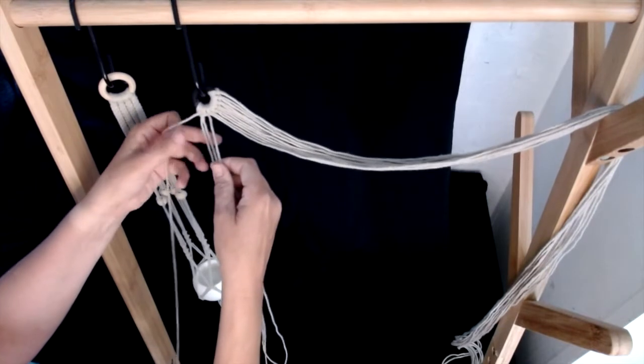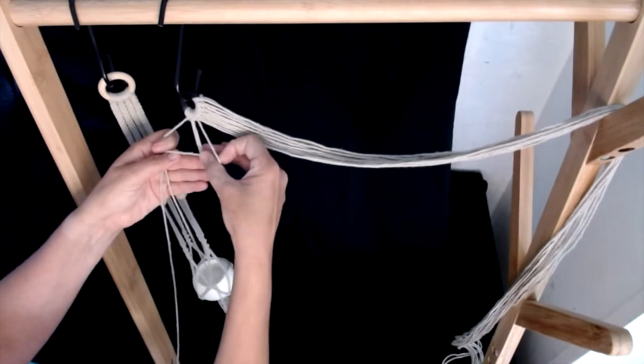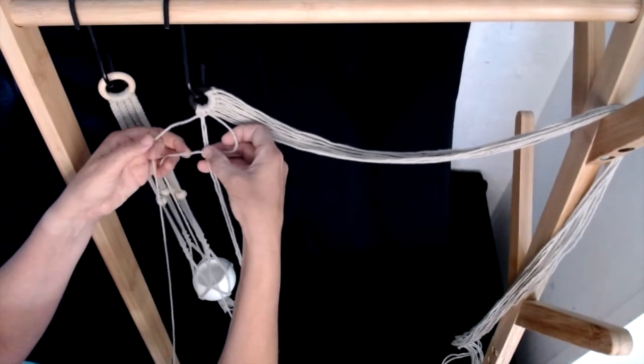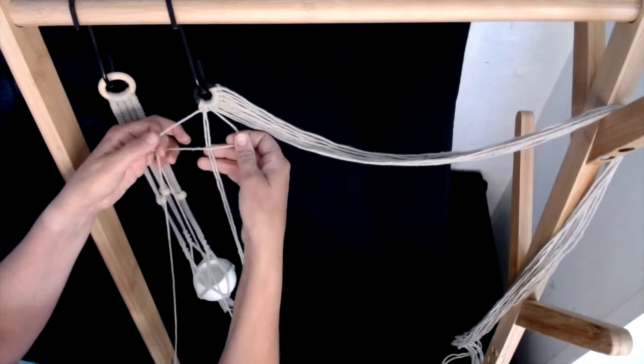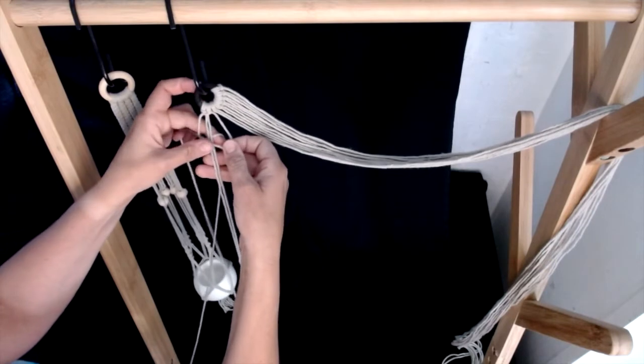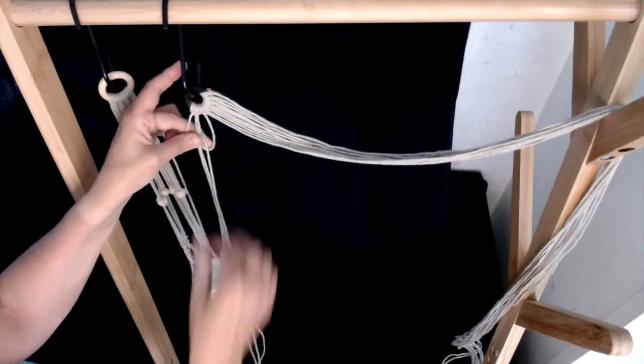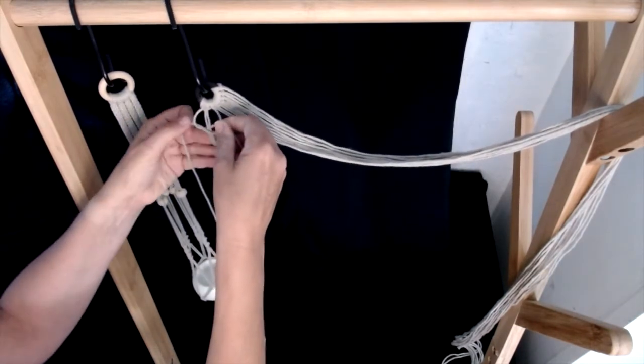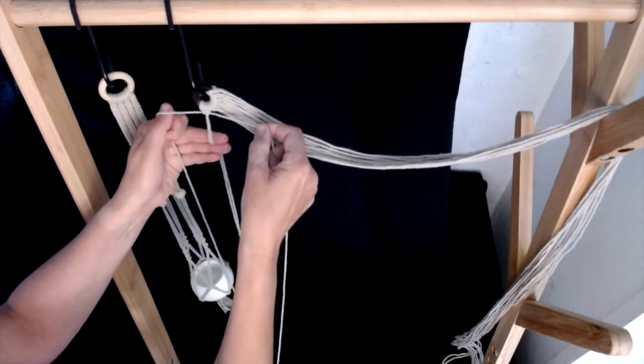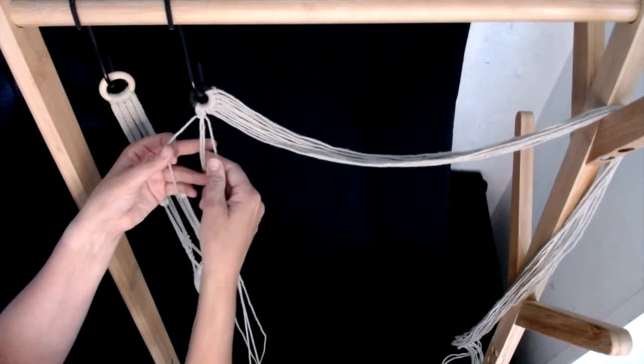We are now going to do exactly the same knot the other way around in mirror image. So now the left hand cord is going to cut across the front of the anchors. The left hand is going to sit in front of that and cut around the back and come out through the opening of the back to front four. Again, slide up your knot and then pull tight. You've now completed one square knot.